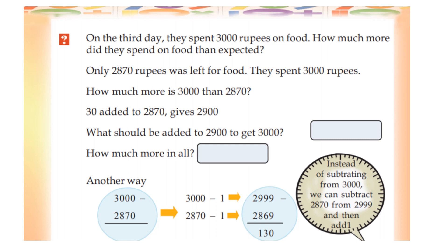How much more did they spend on food? We went from 2,870 rupees. He spent 3,000 rupees on food. Only 4,870 rupees — they spent 3,000 rupees on food. What should be added to 2,900 to get 3,000?